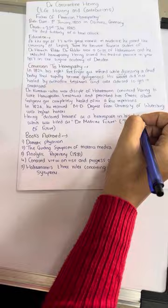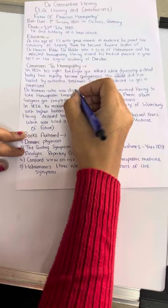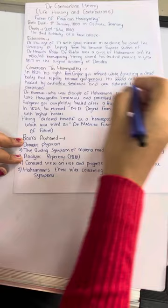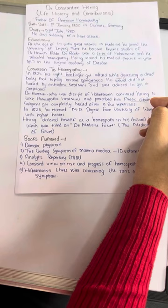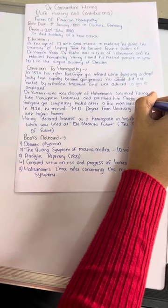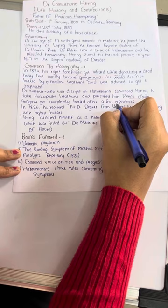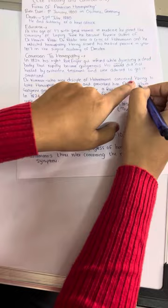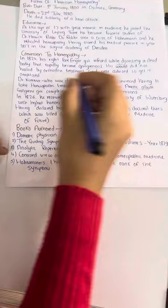Dr. Kummer, who was a disciple of Hahnemann, convinced Dr. Herring to take homeopathic treatment and prescribed him arsenic album. This is an MCQ question - arsenic album was given for gangrene and which got completely healed after few repetitions. Now in the year 1826, this gangrenous wound was cured with arsenic album.